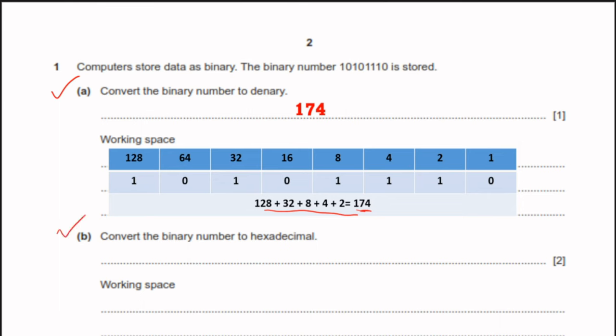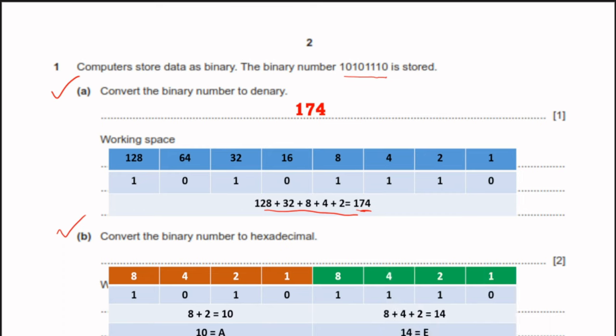Part B: convert the binary number to hexadecimal. We convert the same number to hexadecimal by dividing it into 4 bits and 4 bits. We convert each group first to denary and then look up the hexadecimal value. The first 4 bits: 8 plus 2 is 10 in denary, and 10 in hexadecimal is A. The second 4 bits: 8 plus 4 plus 2 is 14, and 14 in hexadecimal is E. The answer will be AE.